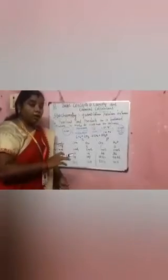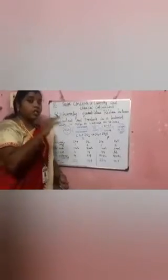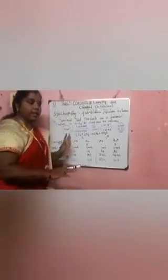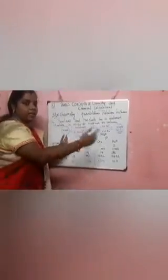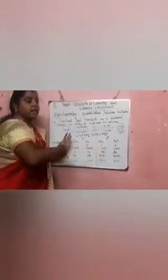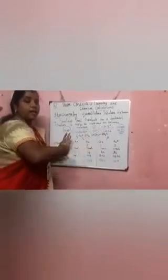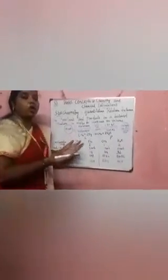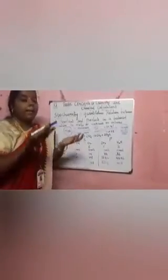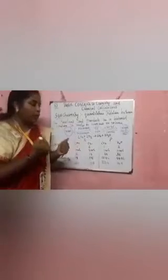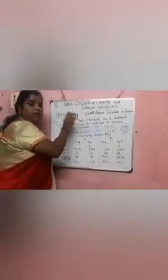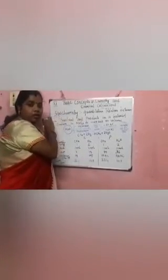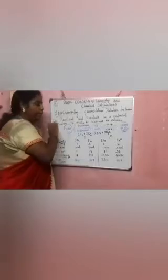But the chemical equation should be in a balanced way. Both the reactant as well as the product side — the number of molecules present will always be in a balanced way. So that process is called stoichiometry.